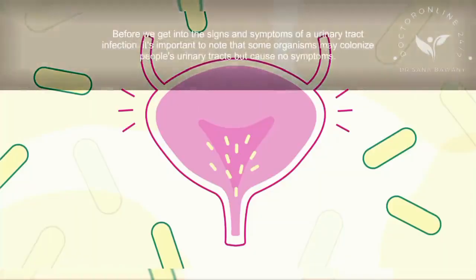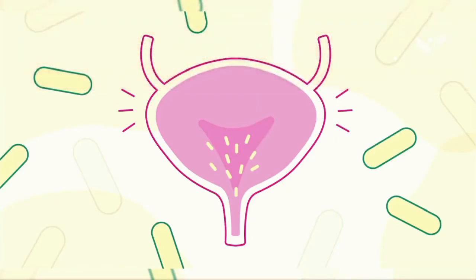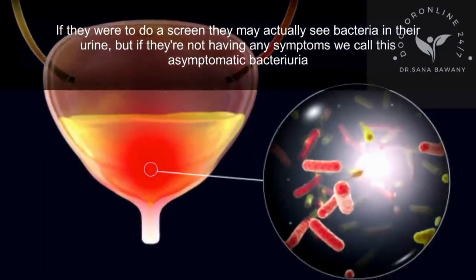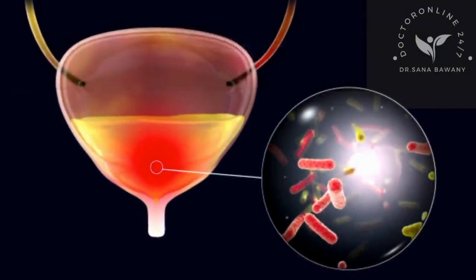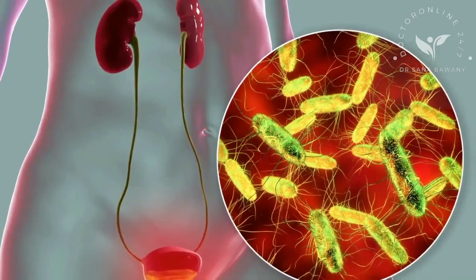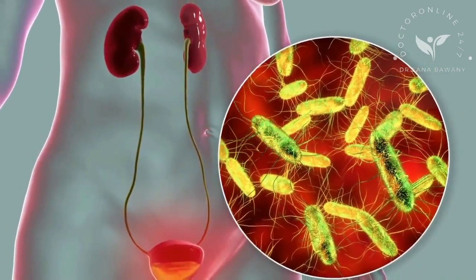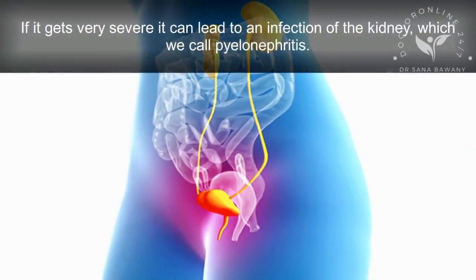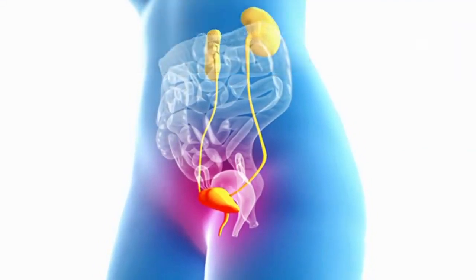Before we get into the signs and symptoms, it's important to note that some organisms may colonize people's urinary tracts but cause no symptoms. If a screen were done, bacteria may actually be seen in the urine, but if there are no symptoms, we call this asymptomatic bacteriuria. If it gets very severe, it can lead to an infection of the kidney, which we call pyelonephritis.